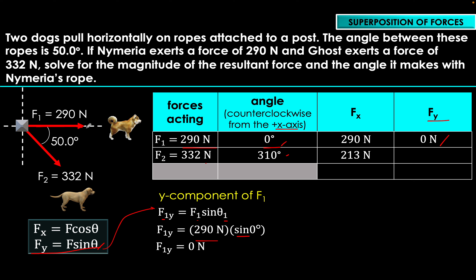Evaluating the answer: 26.8 degrees below the positive x-axis, at 563 Newtons, the resultant force lies in between the two forces acting on the post, which makes physical sense. This means the overall force the post experiences is directed in that direction as a result of the two forces acting simultaneously.